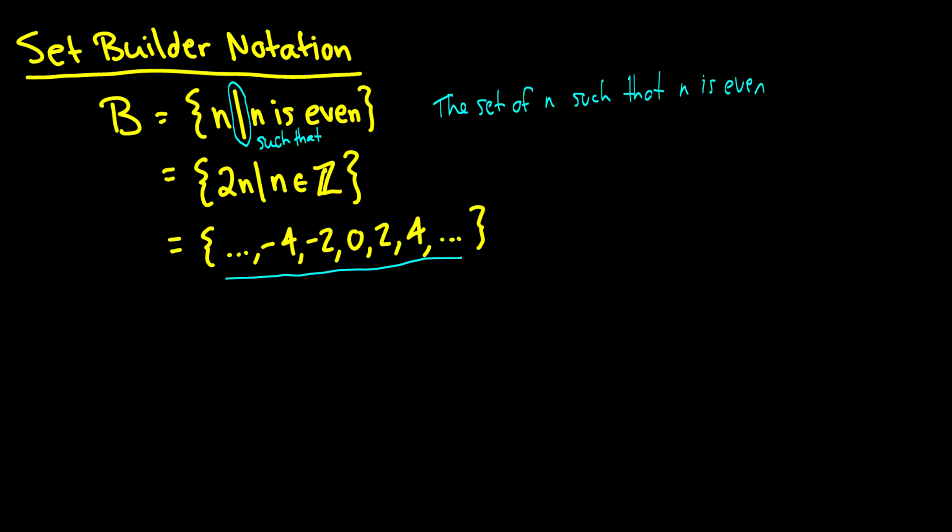And we can also write this as the set of 2N such that N is in the integer set. So if we take N is equal to 0, then 2N is equal to 0. If we take N is equal to 1, then 2N is equal to 2.